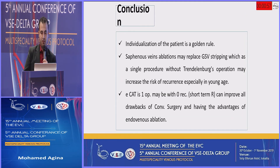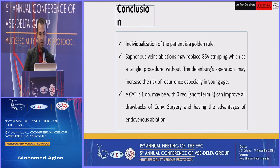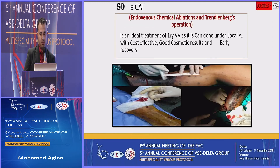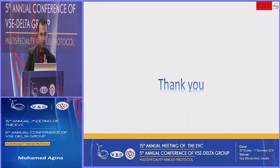Conclusion: individualization and observation is a golden rule. Saphenous vein ablation may replace great saphenous stripping as a single procedure without general/spinal anesthesia, but may increase risk of recurrence especially in younger age. ECAT is a single operation that may achieve zero short-term recurrence and can improve on all drawbacks of conventional surgery while maintaining the advantages of endovenous ablation. ECAT is done under local anesthesia with cost effectiveness, good cosmetic result, and early recovery.